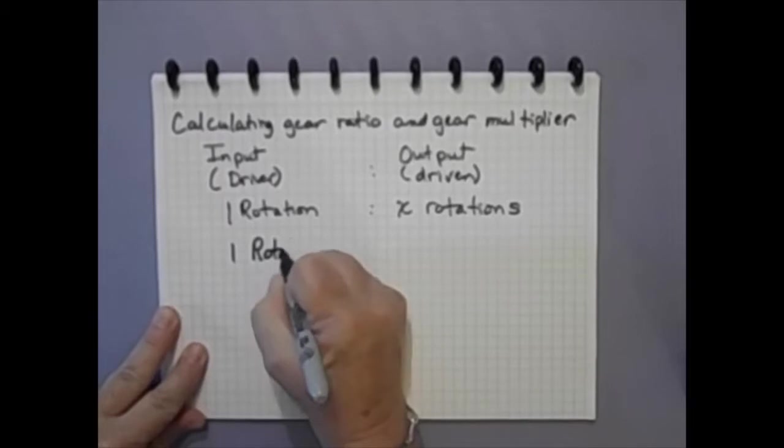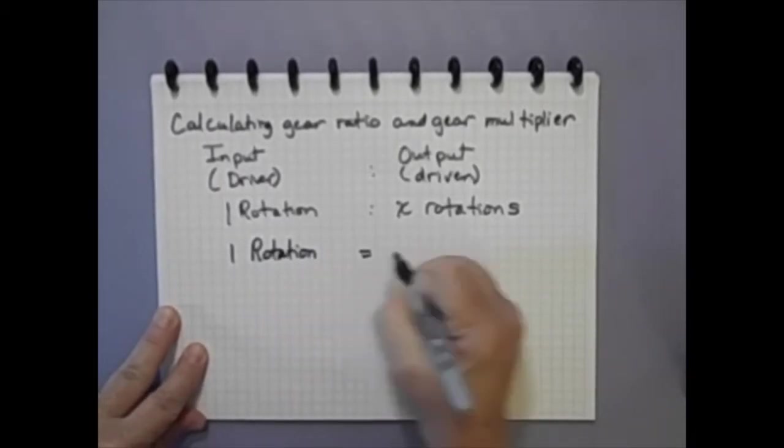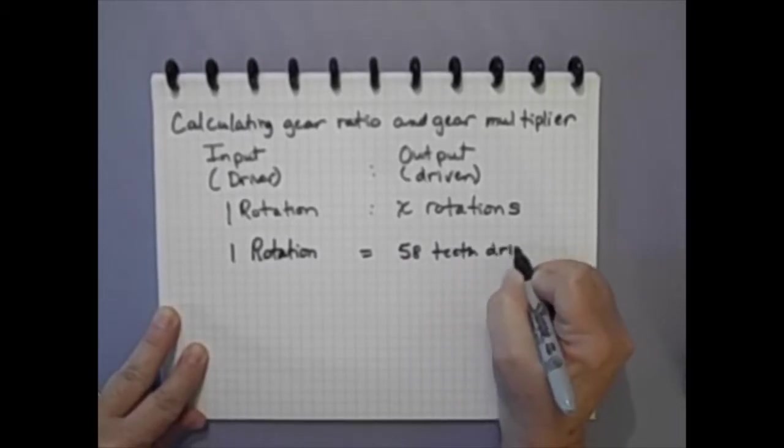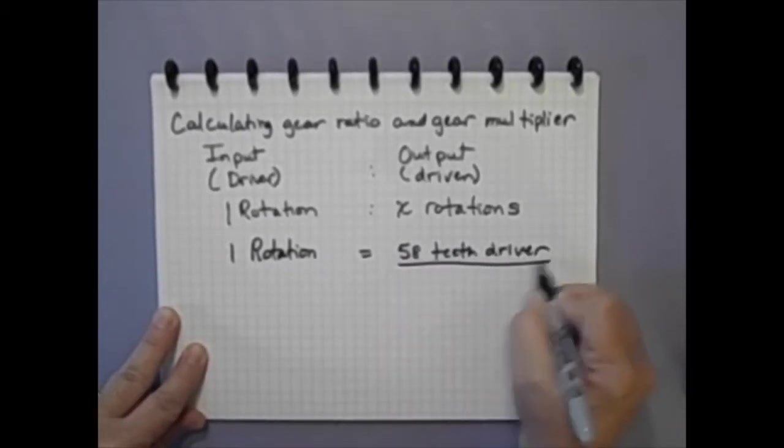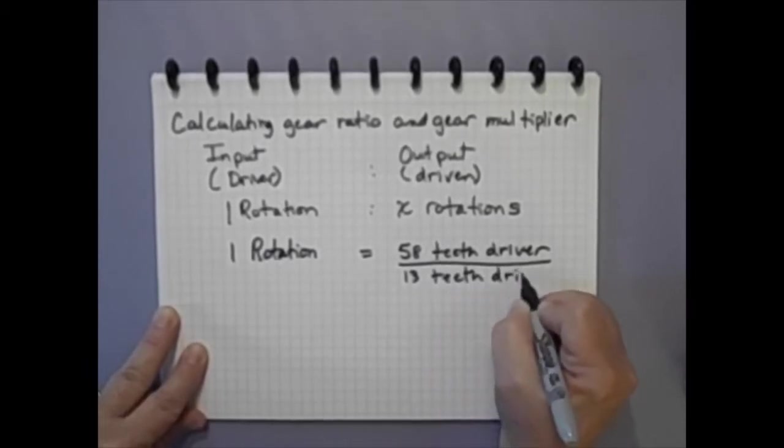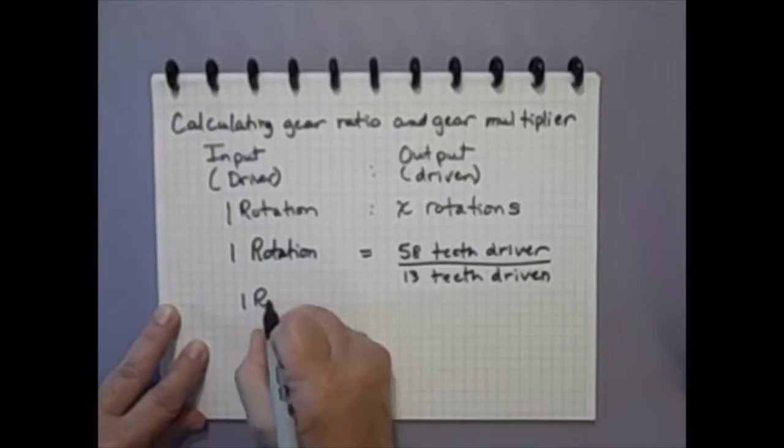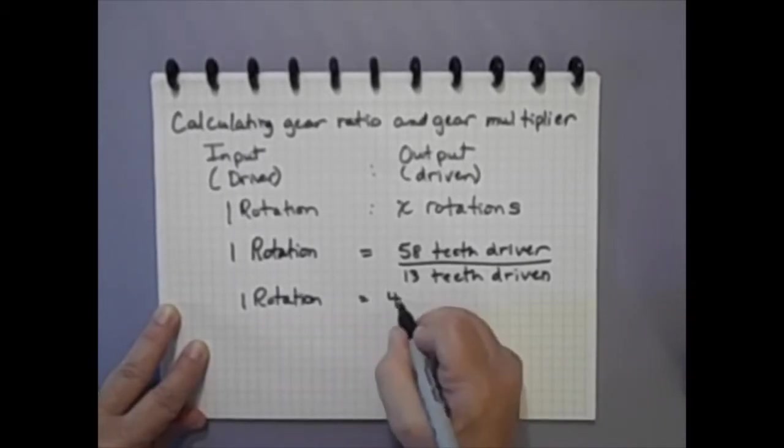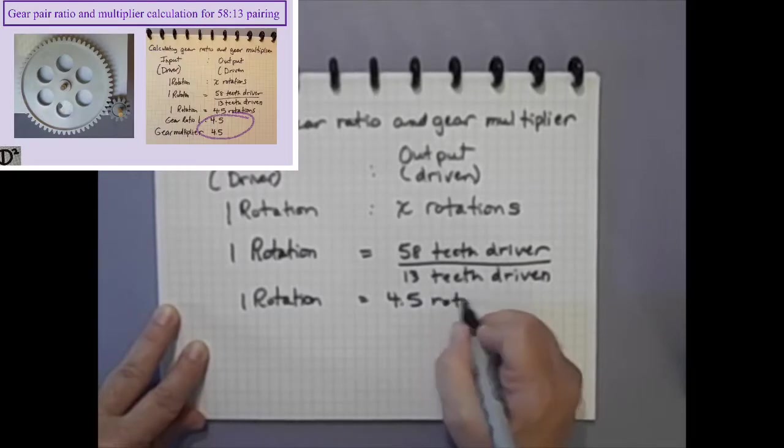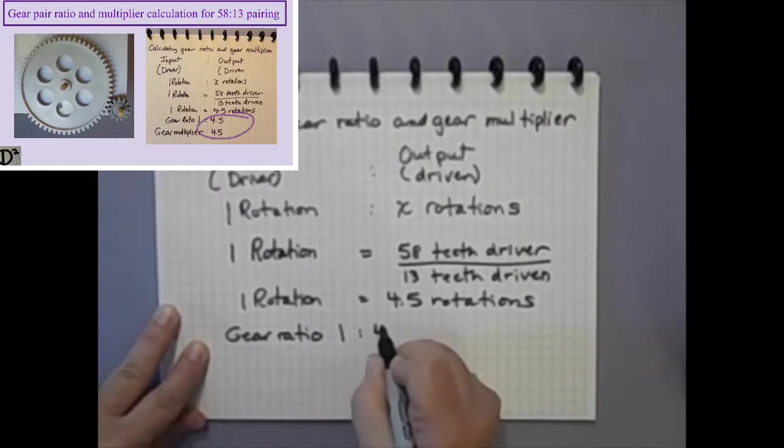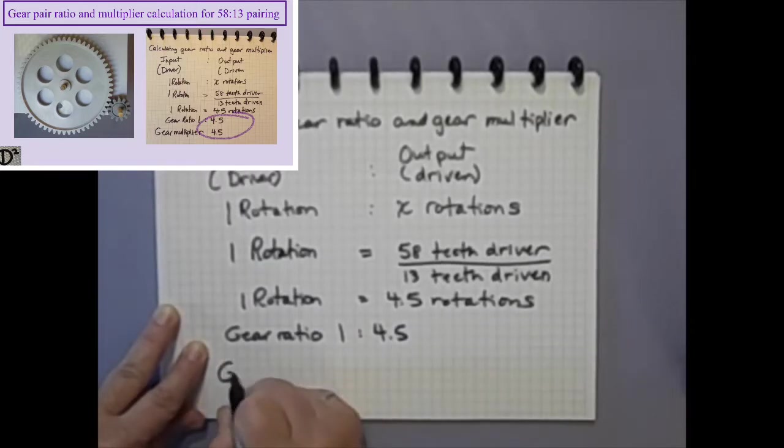What about a gear pairing of 58 to 13? What would the ratio and gear multiplier be? The input gear, 58 teeth, will produce one rotation for each string wrap. Solve for X where the number of teeth on the driver gear is divided by the number of teeth on the driven gear. So 58 divided by 13 equals the ratio of 1 to 4.5 and a gear multiplier of 4.5. This means that when the 58 tooth gear turns once, the 13 tooth gear will turn 4 and a half times.